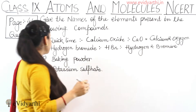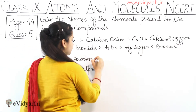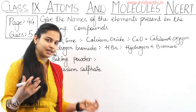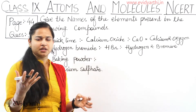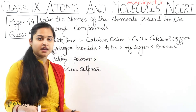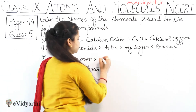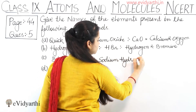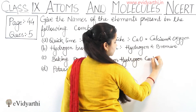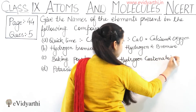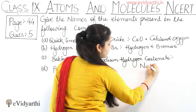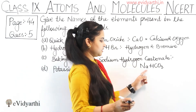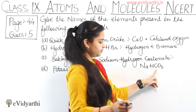Coming to the next one — Baking Powder. Baking Powder, which you normally and generally use, its chemical name is Sodium Hydrogen Carbonate. The chemical formula of this compound is NaHCO3. So how many types of elements are present in it? Sodium, Hydrogen, Carbon, and Oxygen — four types of elements.